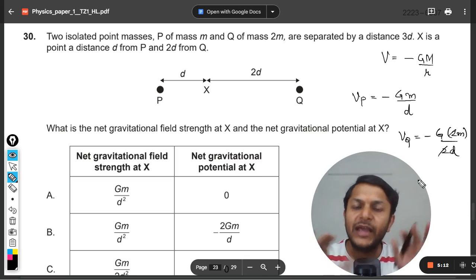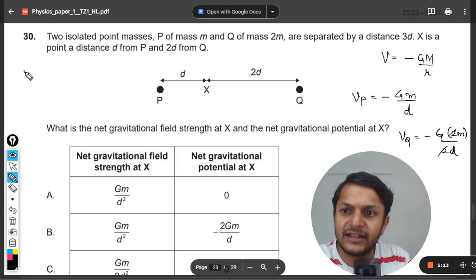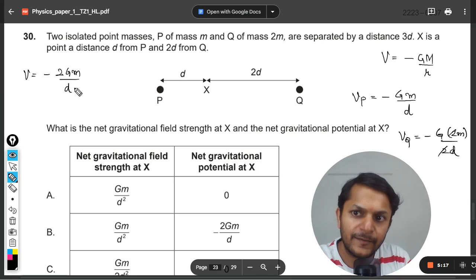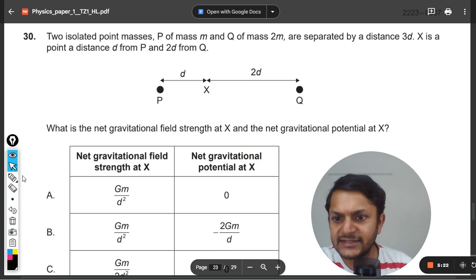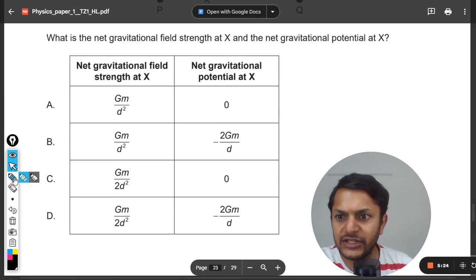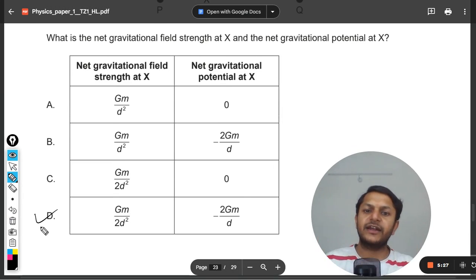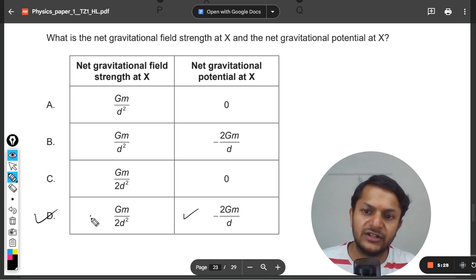So when we add them, the total potential will be negative twice of Gm by d. So it will be of this kind. Let us now see whether C is the answer or D. Clearly D is the correct answer. This is the net potential and this is the net gravitational field strength.